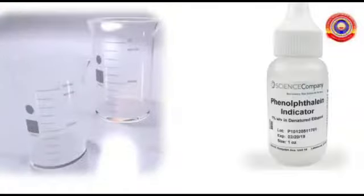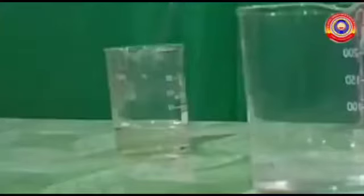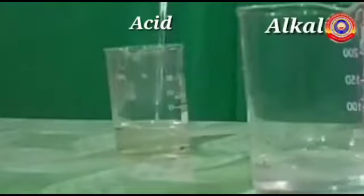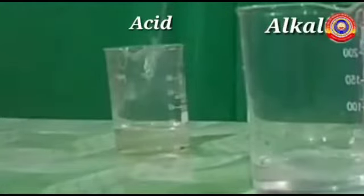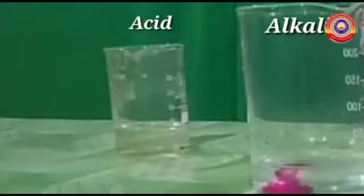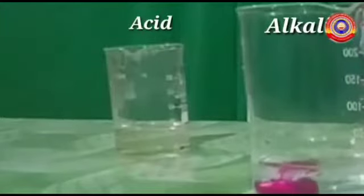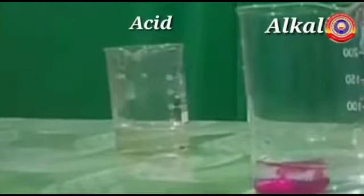Let's see some indicators that are used in laboratory. First one: phenolphthalein. Take small quantities of acid and alkali in two separate beakers. Add two drops of phenolphthalein to each beaker. Do you see any color change? There is no color change in the beaker that contains acid, but the beaker containing alkali changed its color to pink.